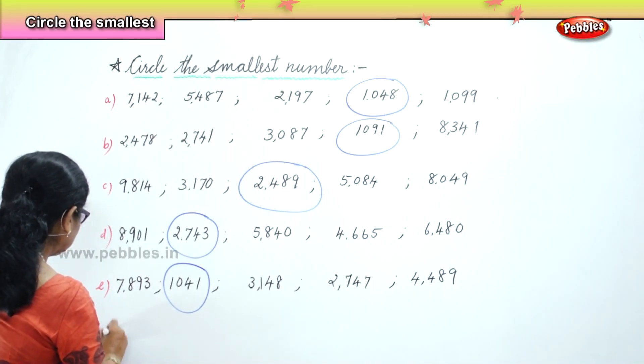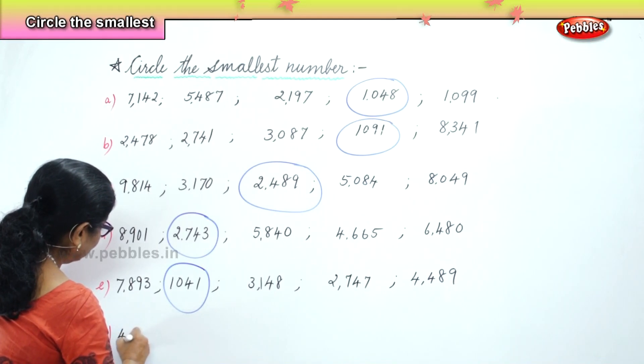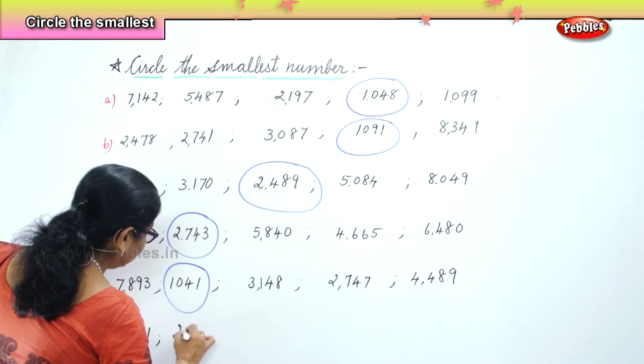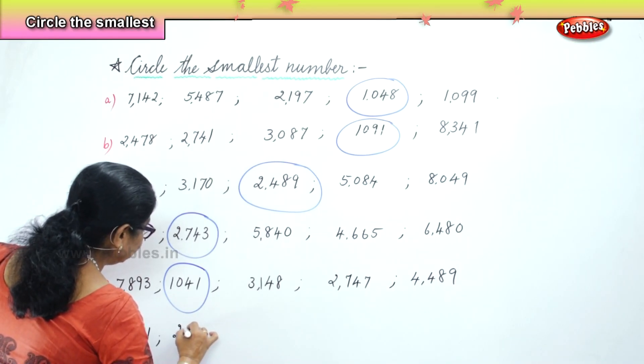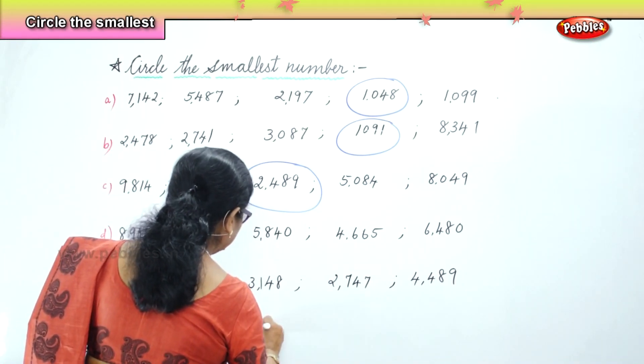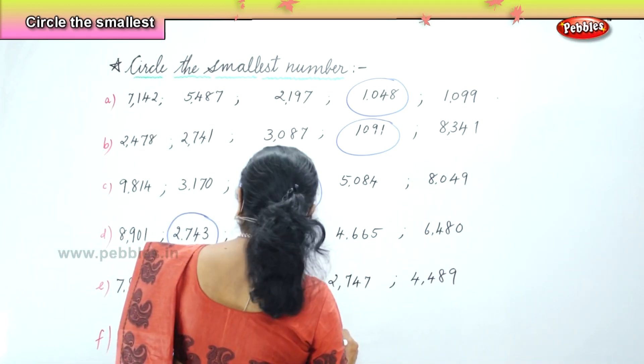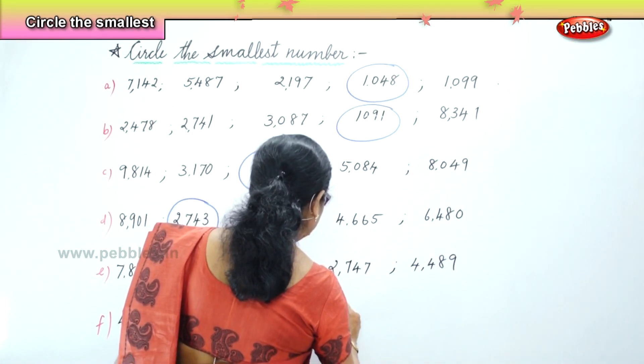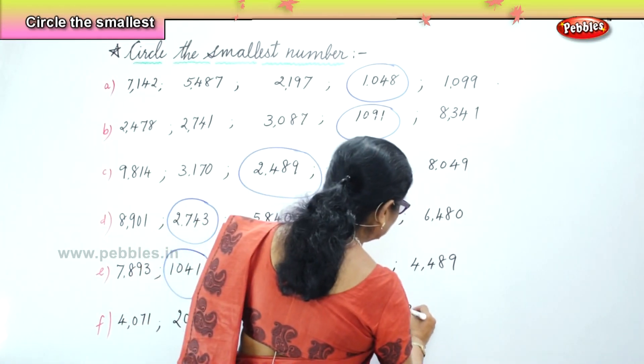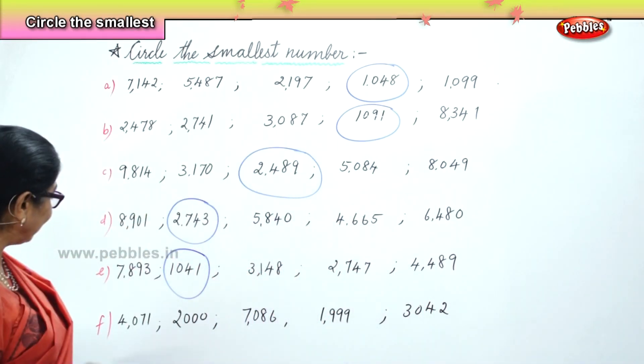Now, I'll give you one more set: 4,071, 2,000, 7,086, 1,999, 3,042. Now you have 5 numbers.